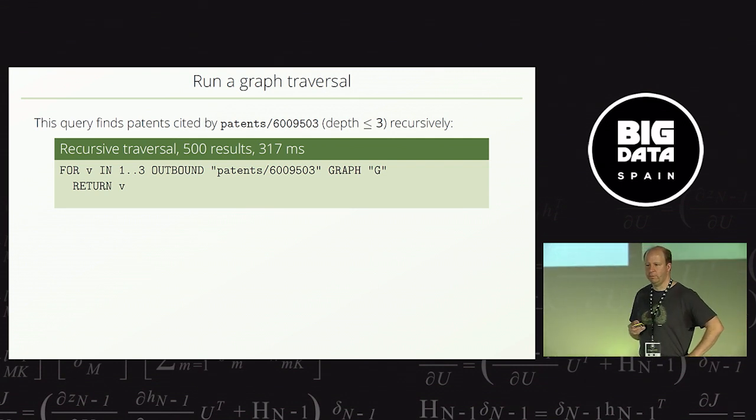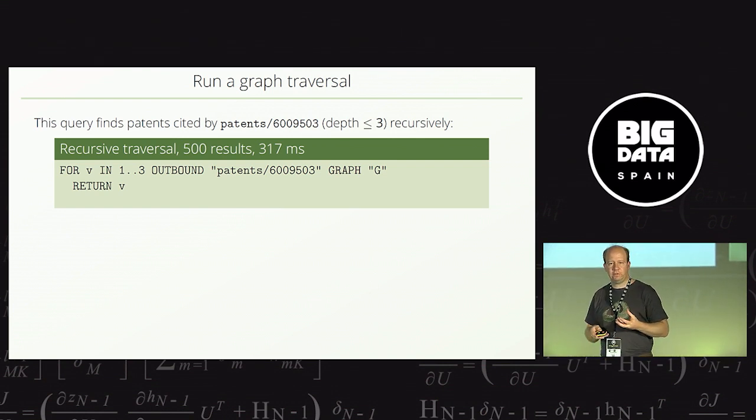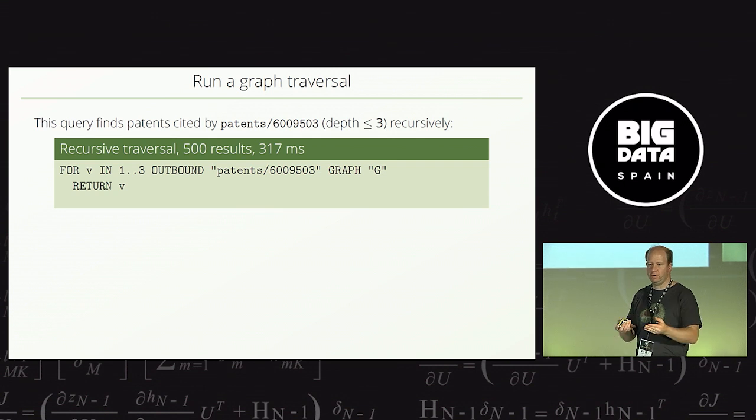Now, let's look at this, for example, just to give you a feeling what kind of graph queries you could do in an ad hoc fashion once you have done that. So, this, for example, is the Arango query language. It essentially tells, start at the patent with number 6009503. Use the graph G, which we just imported. Just follow the edges in the outbound direction. And give me everything I can reach in one, two, three steps. So, here you go. We start with one patent, and we tell the database, do a graph traversal, but only go one up to three steps, so I don't care. And give me all the patents I find. So, I get all the patents I find which are cited by that one. I get the ones which are cited in two steps and three steps, and here you go. Now, this, for example, gave me 500 results, and the execution time is 317 milliseconds.